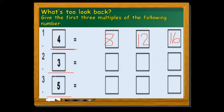Then we have number 2 — the given number is 3. So we find the multiples: 3 plus 3 becomes 6, plus 3 becomes 9, and plus 3 becomes 12. So 6, 9, and 12 are the first 3 multiples of number 3.